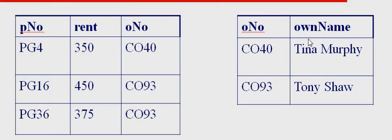In the owner table, the primary key is owner number. It's unique. So here we have a primary key in the property table, and here we have a primary key in the owner table.